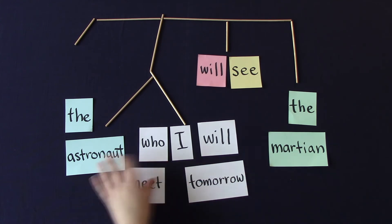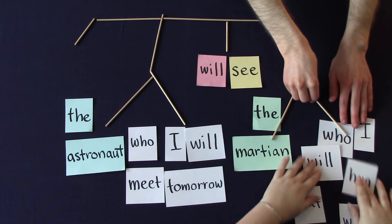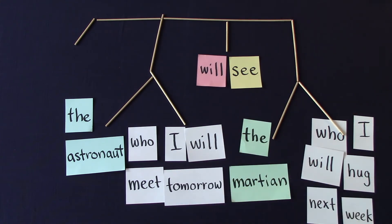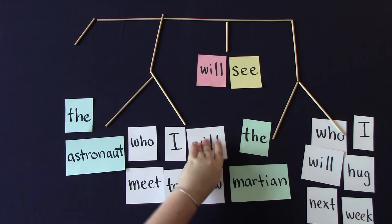And we can really see this if we add in another clause, like who I will hug next week. So now we have not one, not two, but three wills. Which one do we move?